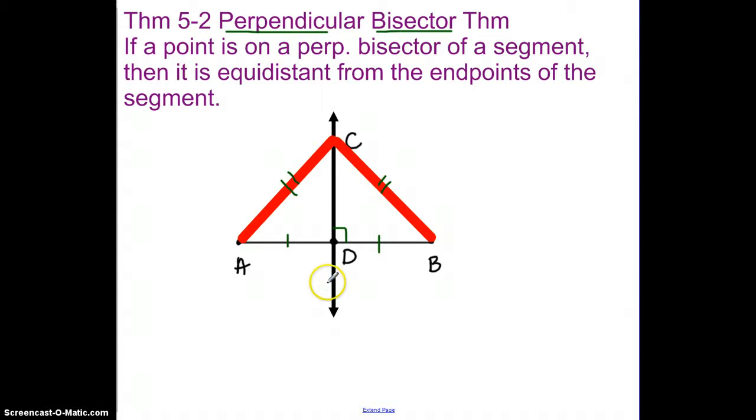So that's going to be our focus today, dealing with a 90-degree angle and bisecting. Now this happened to bisect a segment. Remember, bisect means to cut in half or to cut into two equal pieces.